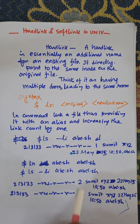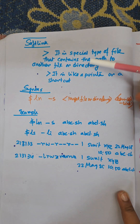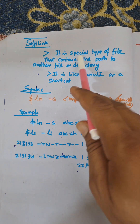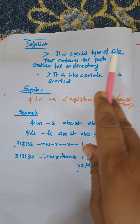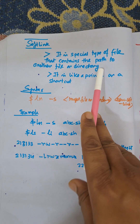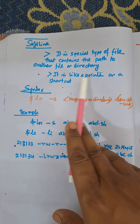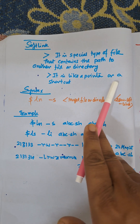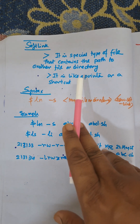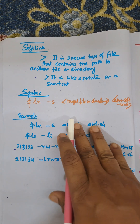Now let us consider the softlink. A softlink is a special type of file that contains the path of another file or directory. It is like a pointer or shortcut — similar to a shortcut in the Windows operating system.